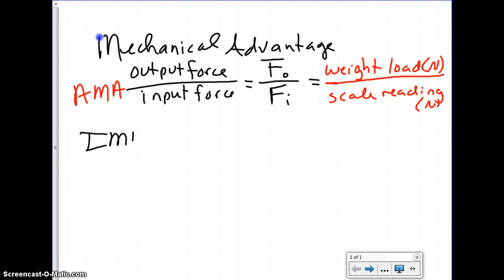Now if we're talking about IMA, that's ideal mechanical advantage. That is telling you in an ideal situation where there's no friction, then you can have an ideal mechanical advantage. Now there are different formulas for each of the different types of simple machines.